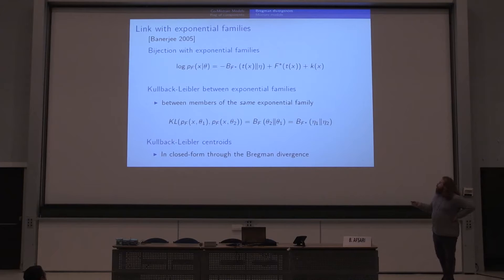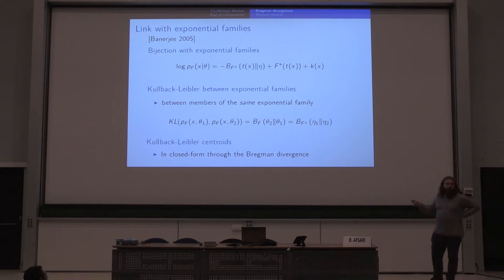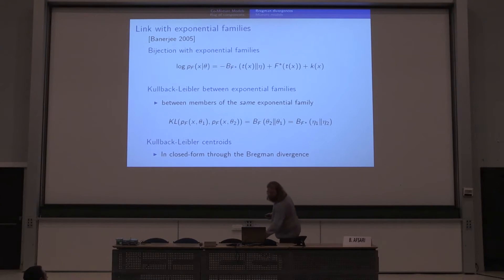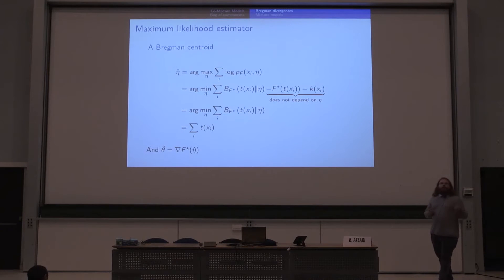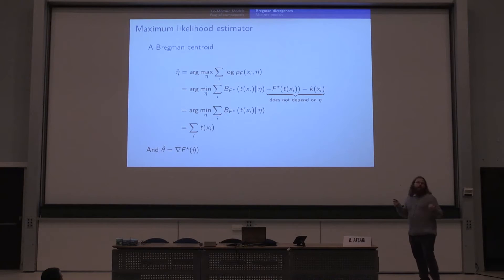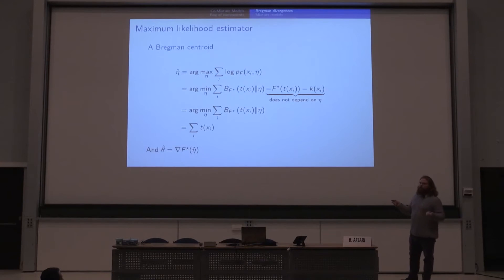Since we have the Bregman centroid in closed form, we get the Kullback-Leibler centroid of sets of exponential families in closed form as well. This is a very useful tool for designing algorithms working on exponential families. Additionally, we can show that the maximum likelihood estimator of an exponential family is simply a Bregman centroid of the sufficient statistics of the distribution — so a statistical problem becomes a geometrical problem which can be solved efficiently.